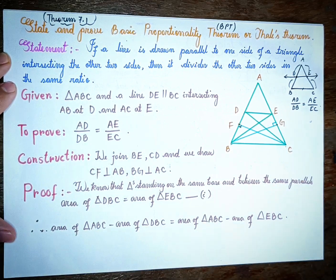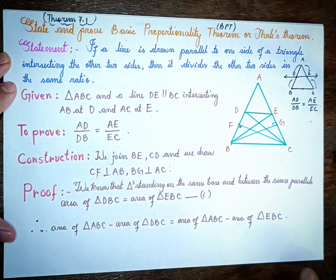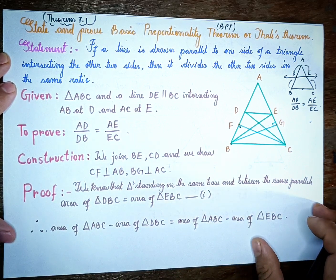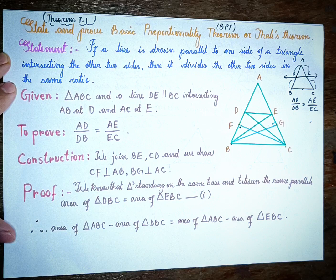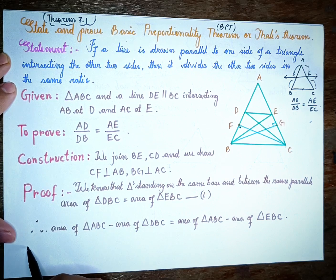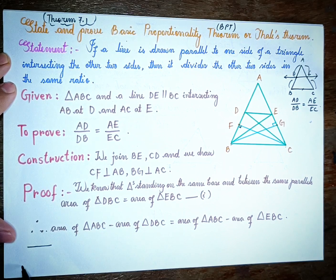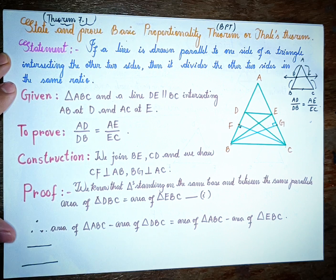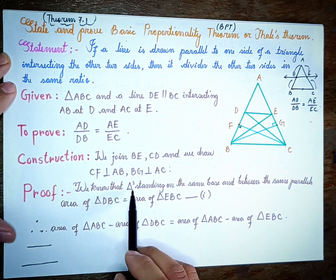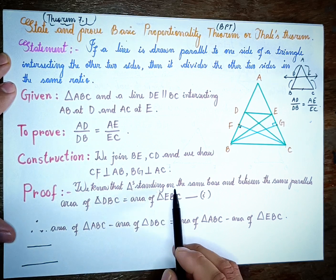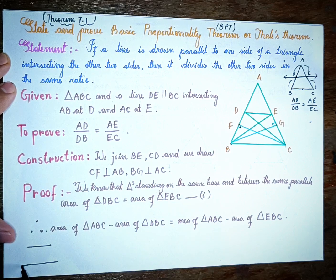Now we need to do the proof. The proof uses concepts from Class 9. We use the property of triangles standing on the same base and between the same parallels.